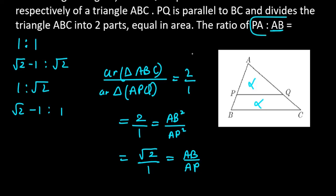But we need to find PA over AB. Inverting this, we get PA over AB equals 1 over root 2, or 1 ratio root 2. So option C is the correct answer.